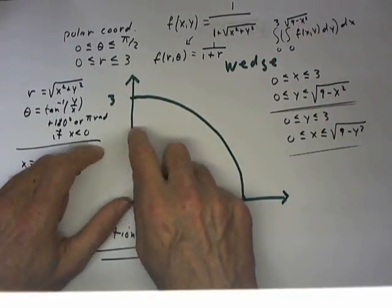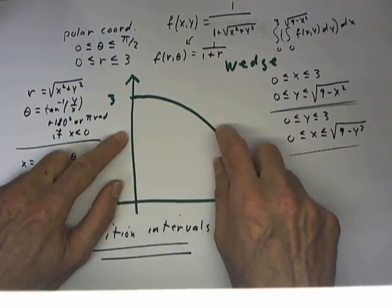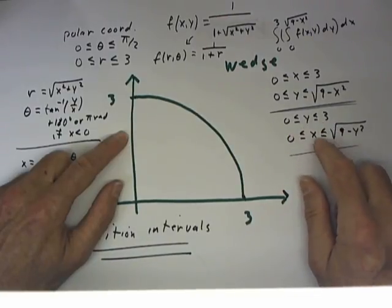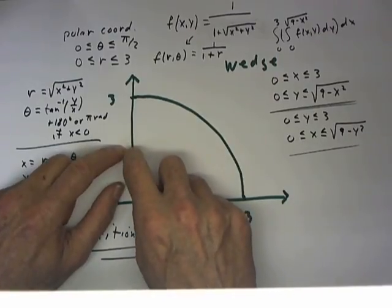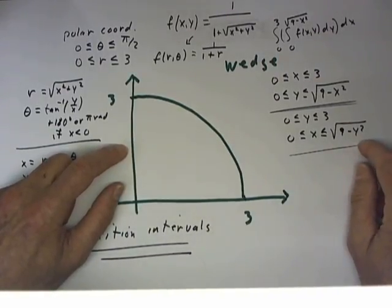Alternatively, we could describe in terms of cross sections parallel to the x-axis, so that the value of y would be constant. Y can take any value between 0 and 3, and for any value of y, x runs from 0 to the square root of 9 minus y squared.